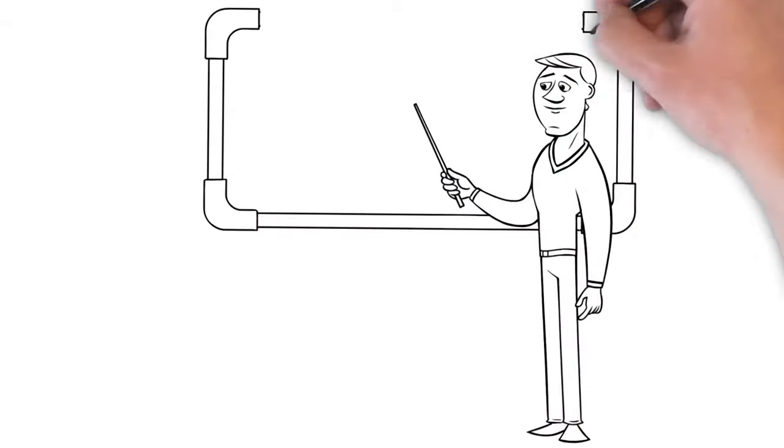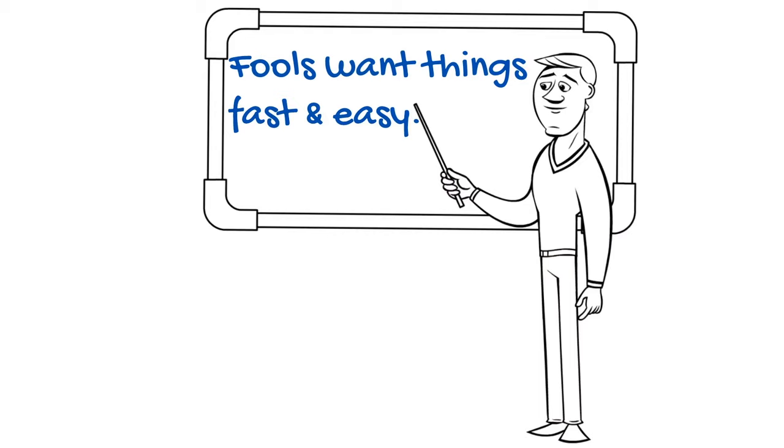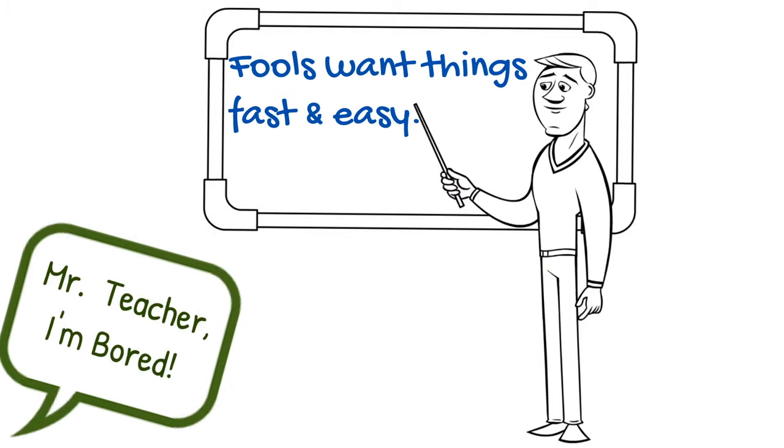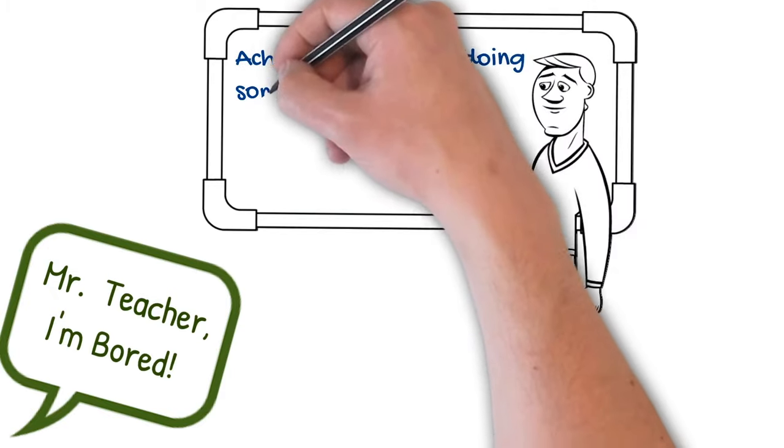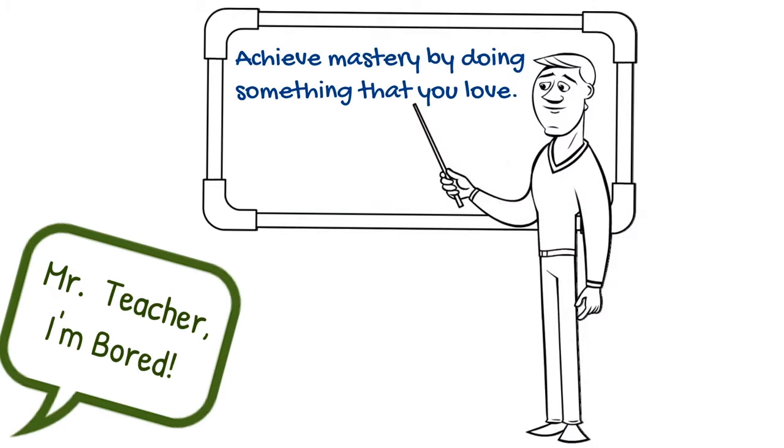All the fools in life want things fast and easy. A lot of this comes from boredom. Boredom is the great enemy as well as fear. Your goal is to reach the ultimate skill level and intuitive feel for what must come next. And one of the greatest ways to achieve this is to choose to do something that you love.